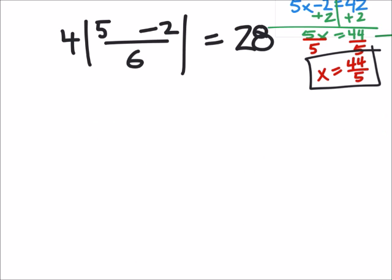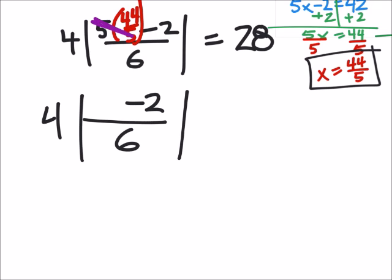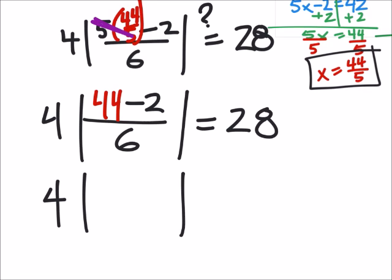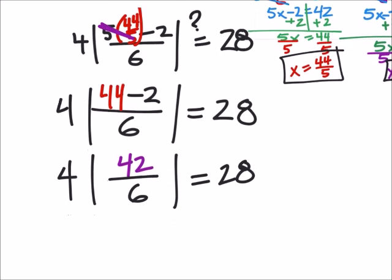We're going to check this one. The x was multiplied by the five, so I'm just going to replace x with the value we found, and we're going to have to do this twice to check. If I look at this, I can simplify, so I've got four times the absolute value. I've got a 44 there. This should equal 28, and that's the big question here. We put a question mark: are they equal? If they are equal, then we know our answer is good. So we got four times the absolute value: 44 minus 2 is 42, and we'll divide that by six. Does this equal 28?